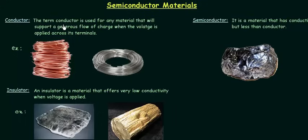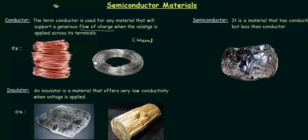The first topic is conductor. The term conductor is used for any material that will support a generous flow of charge when voltage is applied across its terminals. The flow of charge through a cross-sectional area in a given time is called current. Depending upon this current we will categorize materials into three categories: conductor, insulator, and semiconductor. For conductors — examples being copper wire and aluminium wire — the cross-sectional area A equals pi R squared, and the amount of current flowing through this area is very high.